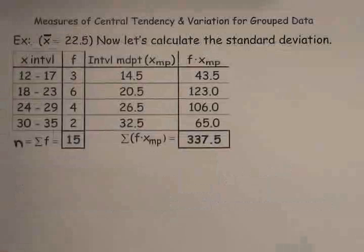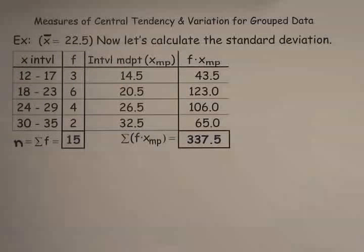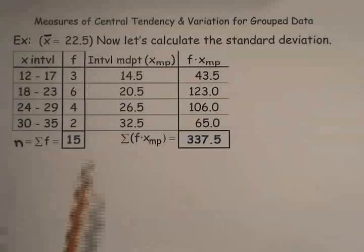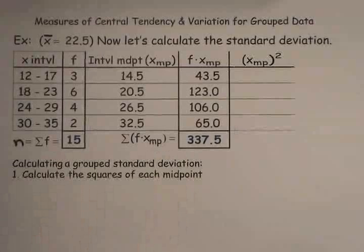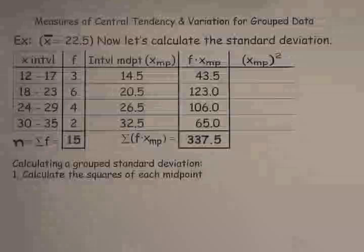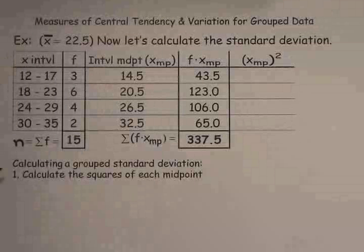You can probably guess now that we're going to continue this problem and calculate the standard deviation for the group data set. Remember, we've already found out that x bar is 22.5. We've already calculated x bar using the table values so far. So we're just going to pick up from there. Assuming that you've already done the work for calculating the group mean, the next thing you'll need to do in calculating a group standard deviation is to calculate the squares of each midpoint.